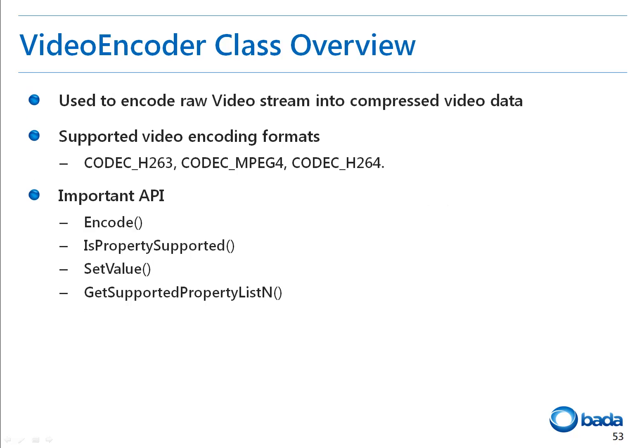The video encoder class is used to encode raw YUV420 data to compressed H.264, H.263, and MPEG-4 streams. All APIs of the video encoder class are synchronous. A simple profile is supported for MPEG-4. Profiles 0 and 3 are supported for H.263. A baseline profile is supported for H.264. The encode API encodes video data from the source buffer and stores the encoded data in the destination buffer.